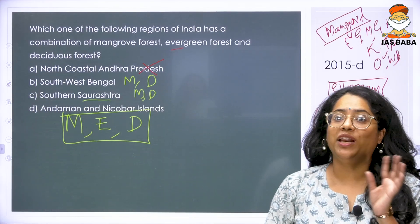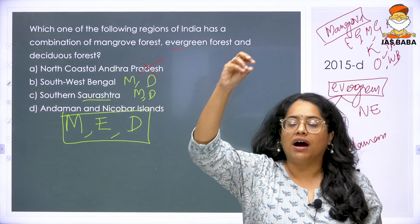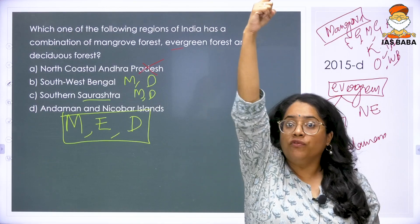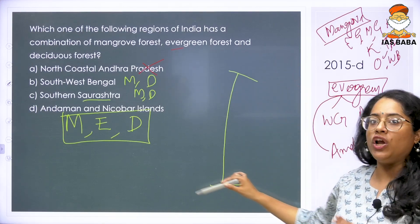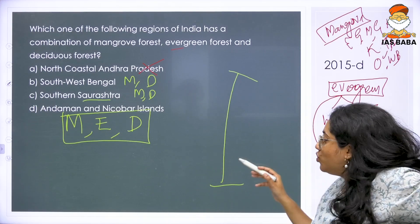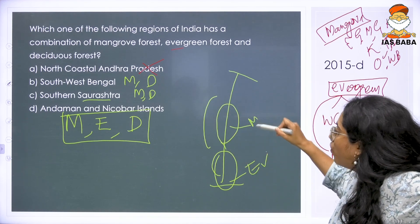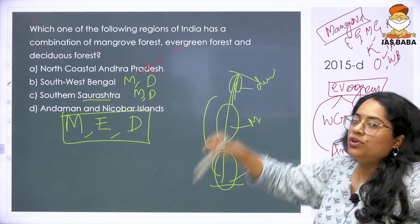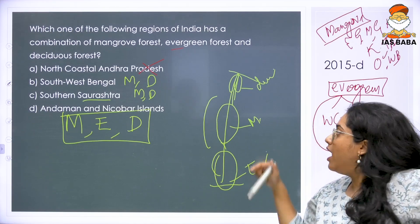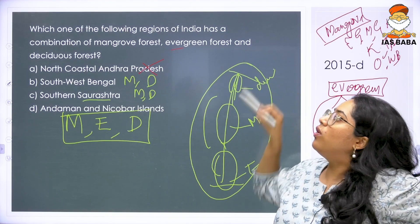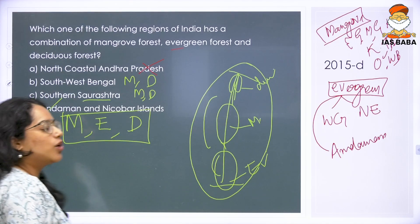Why? Because these are a large group of islands spanning different latitudes from northern to southern tropical zones. The question just says Andaman and Nicobar Islands — they did not specify Northern or Southern Andaman. Towards the tropical southern part, you do see evergreen. On most of the islands, you see mangroves. And towards the northern part, you do see deciduous also. In this group of islands, you do see all three combinations happening. So the answer to this 2015 question is D — Andaman and Nicobar Islands.